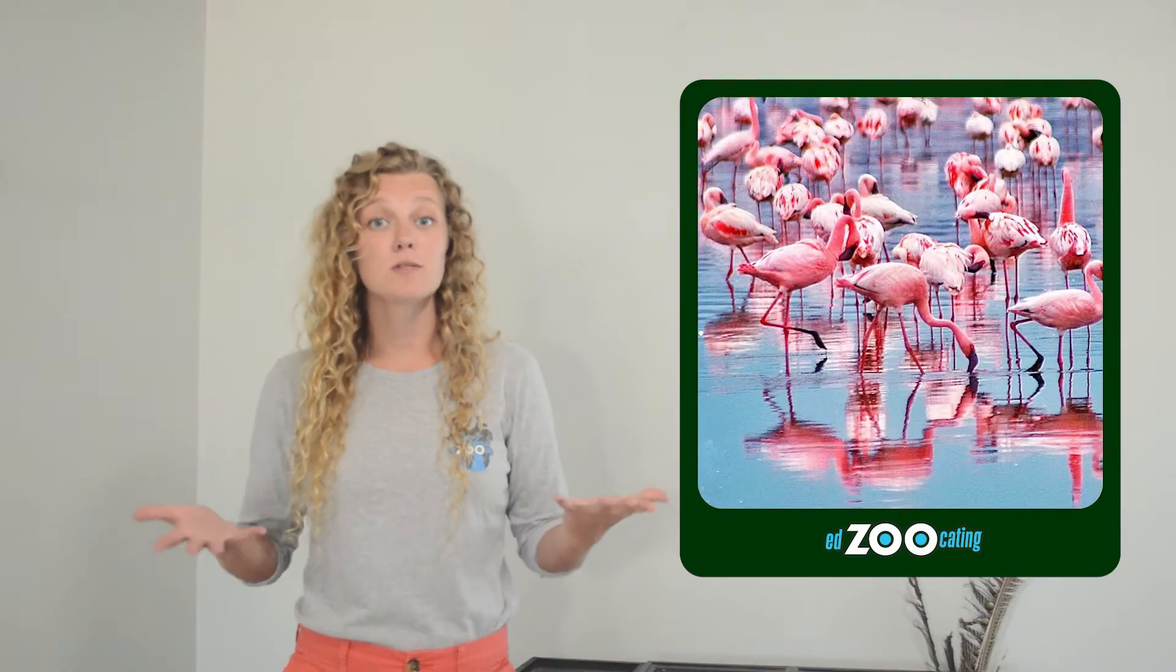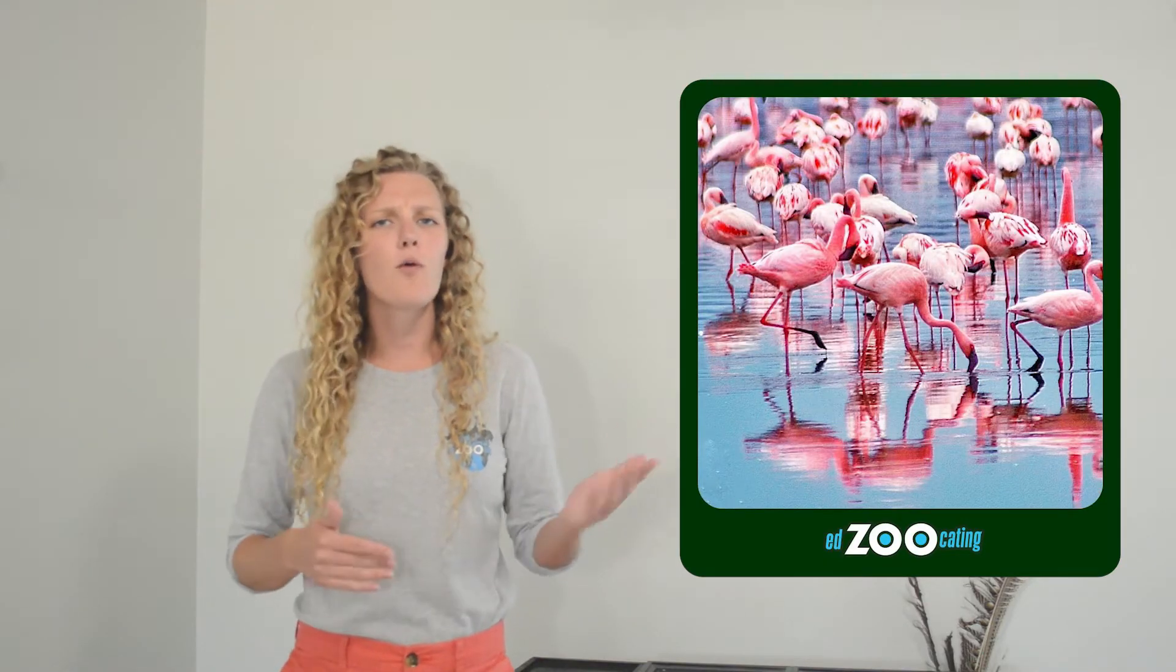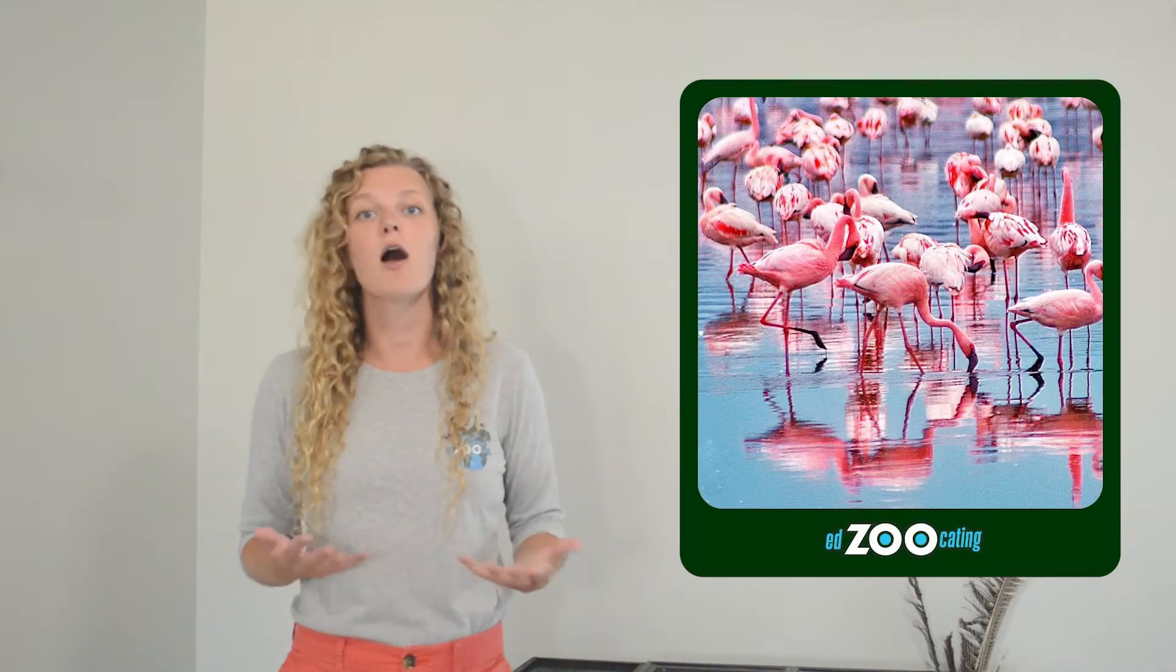Whereas other gregarious animals, like flamingos, which live in enormous groups together, could come and go without really changing the structure of the group itself.